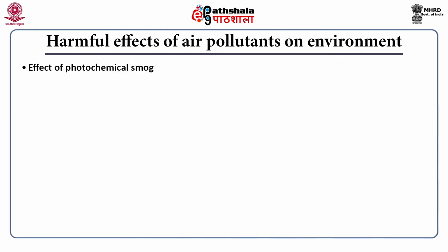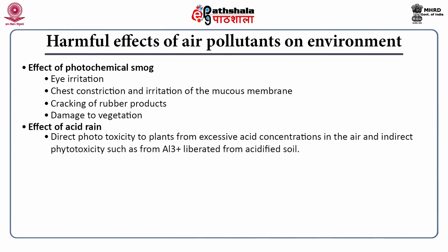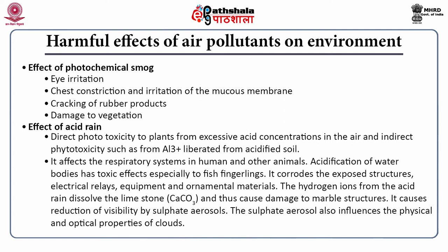Effects of photochemical smog include eye irritation, chest constriction and irritation of the mucous membrane, cracking of rubber products and damage to vegetation. Effects of acid rain include direct phytotoxicity to plants from excessive acid concentration in the air, and indirect phytotoxicity such as from aluminum released from acidified soil. It affects the respiratory systems in humans and other animals. Acidification of water bodies has toxic effects, especially to fish fingerlings. It corrodes exposed structures, electrical relays, equipment and ornamental materials. Hydrogen ions from acid rain dissolve limestone, causing damage to marble structures.